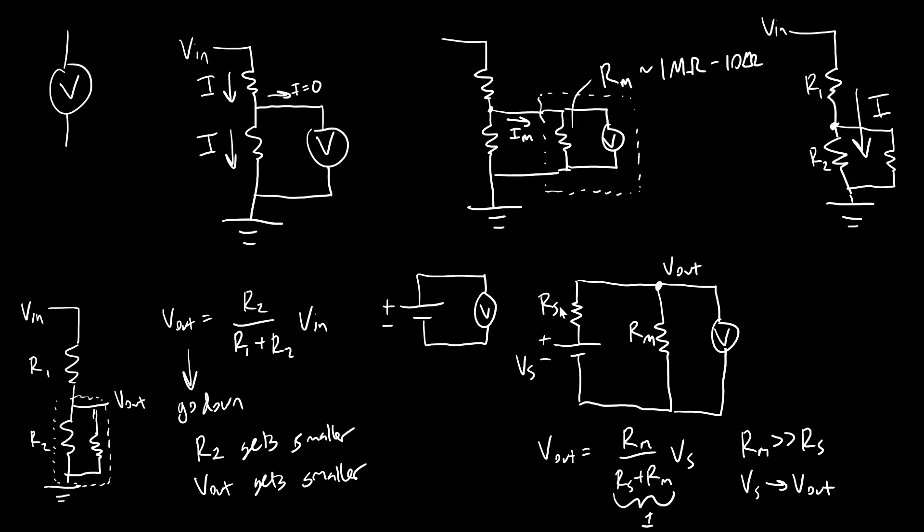If for some reason this source resistance is much higher, then this fraction would start to drop and your measured voltage would actually not accurately reflect the open circuit voltage of the source.